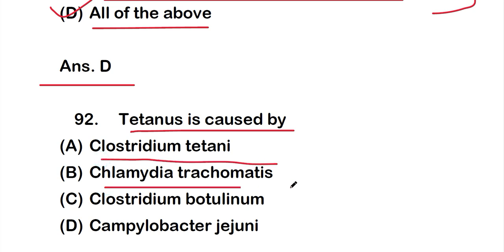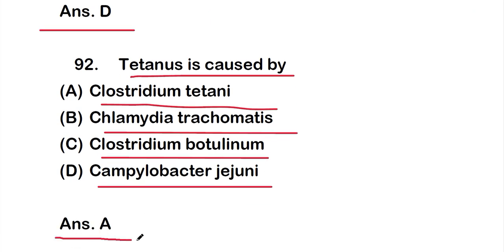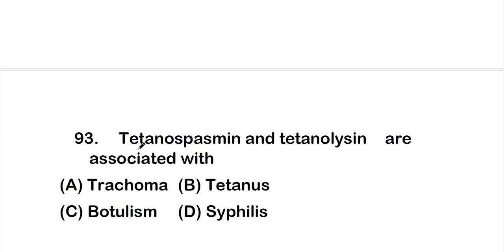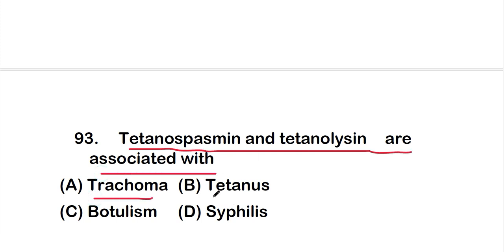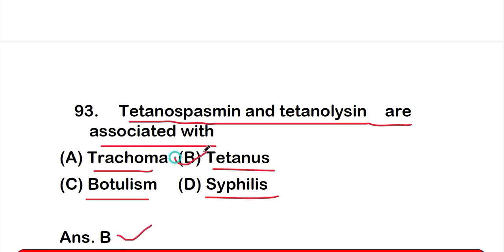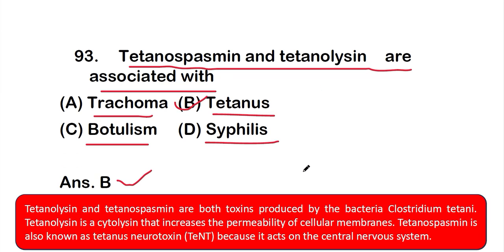Question number 92: Tetanus is caused by — option A: Clostridium tetani, option B: Chlamydia trachomatis, option C: Clostridium botulinum. The correct answer is option A — Clostridium tetani. Tetanus is associated with tetanospasmin and tetanolysin, both toxins produced by Clostridium tetani. Tetanolysin is a cytolysin that increases the permeability of cellular membranes, while tetanospasmin is also known as tetanus neurotoxin because it acts on the central nervous system.